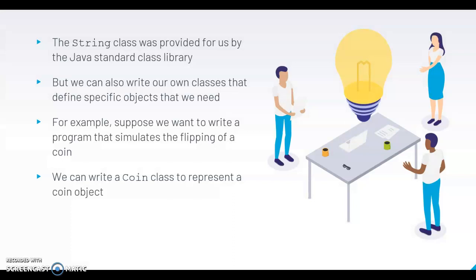The string class was provided for us by the Java Standard Class Library, but we can also write our own classes that define specific objects that we need. For example, suppose we want to write a program that simulates the flipping of a coin. We can write a coin class to represent a coin object.